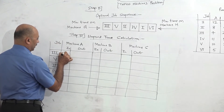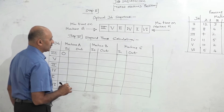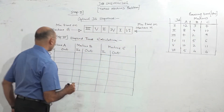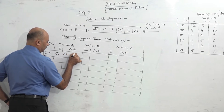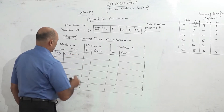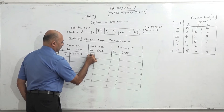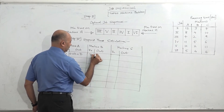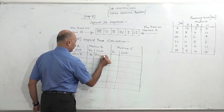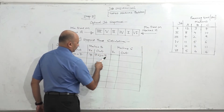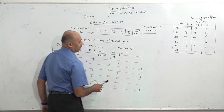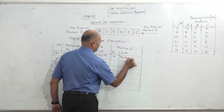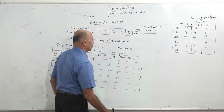Starting elapsed time calculation with job 3. In-time on machine A is 0. Time on A is 7, so out-time is 7. In-time on B is 7. Time on B is 2, out-time is 9. In-time on C is 9. Time on C is 9, so 9 plus 9 = 18. Job 3 is done.